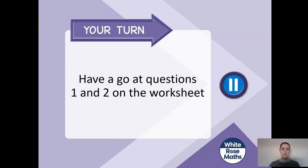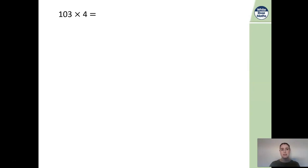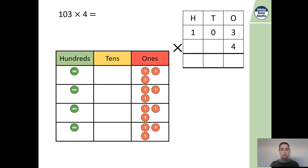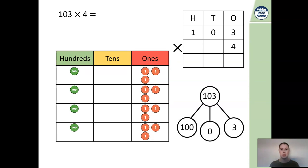I'd like you now to have a go at doing questions one and two on your worksheet. So here we have the sum 103 multiplied by four. We're going to move on to looking at our written method. To help us with our written method from what we looked at yesterday, we can use our ones counter to help us as well. We're also going to look at partitioning our number, because when we did each step yesterday we looked at the different sections of the number we partitioned.